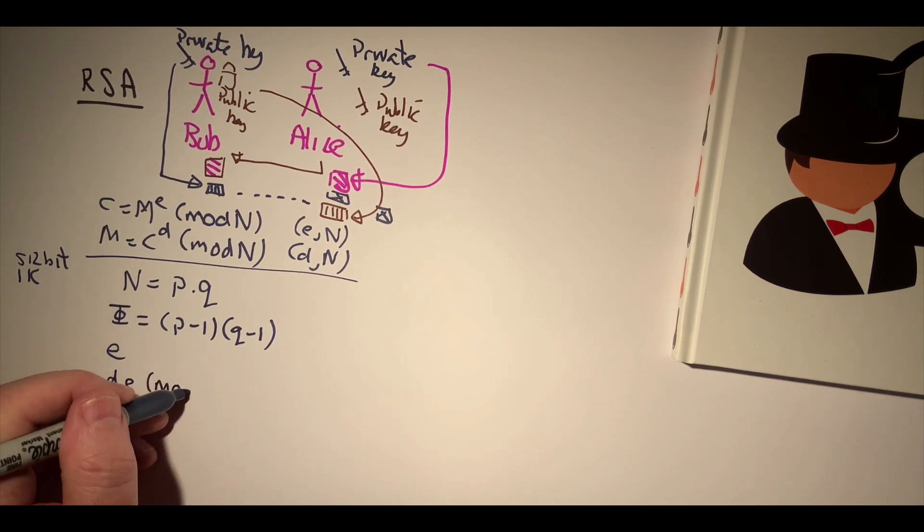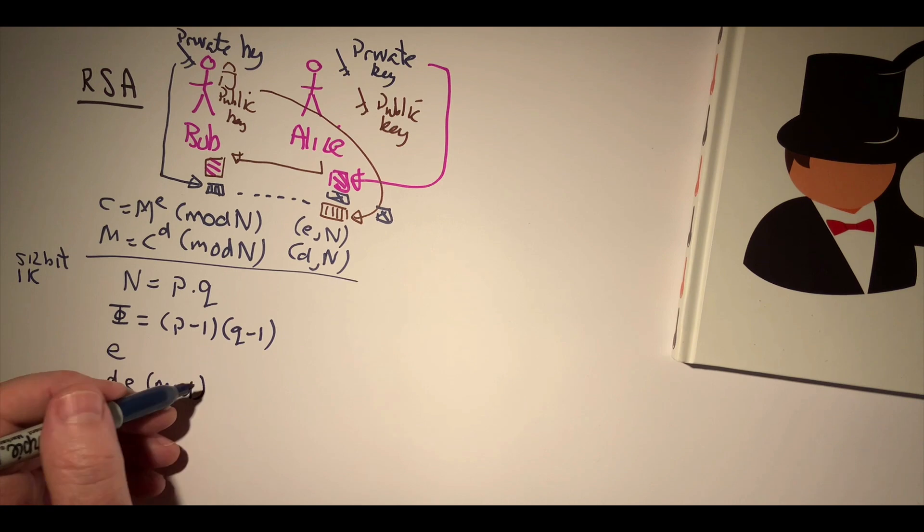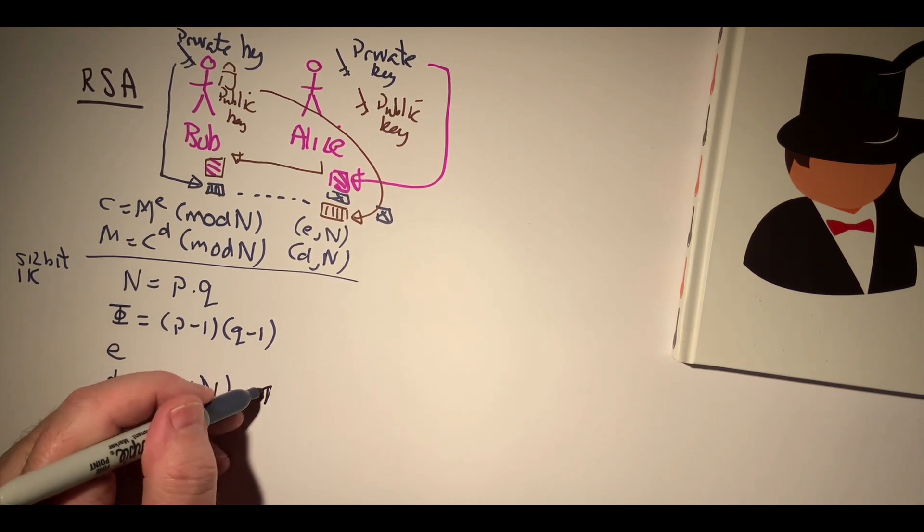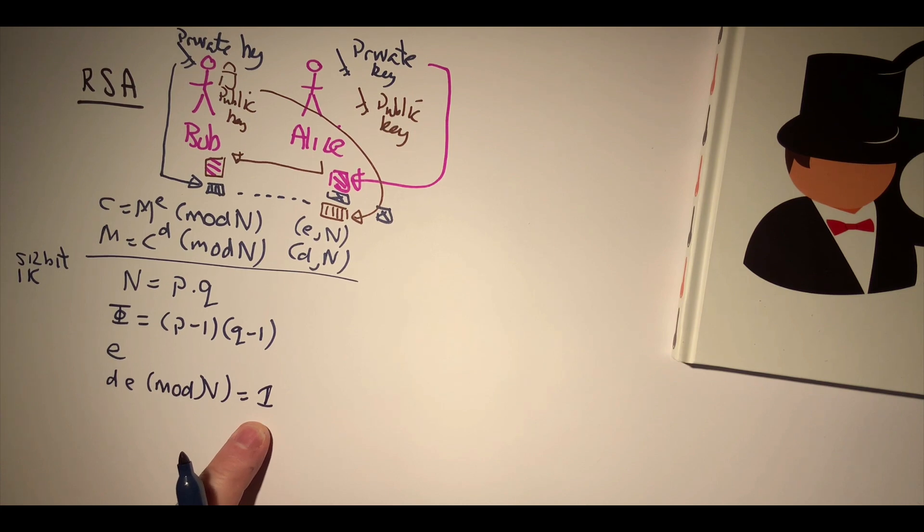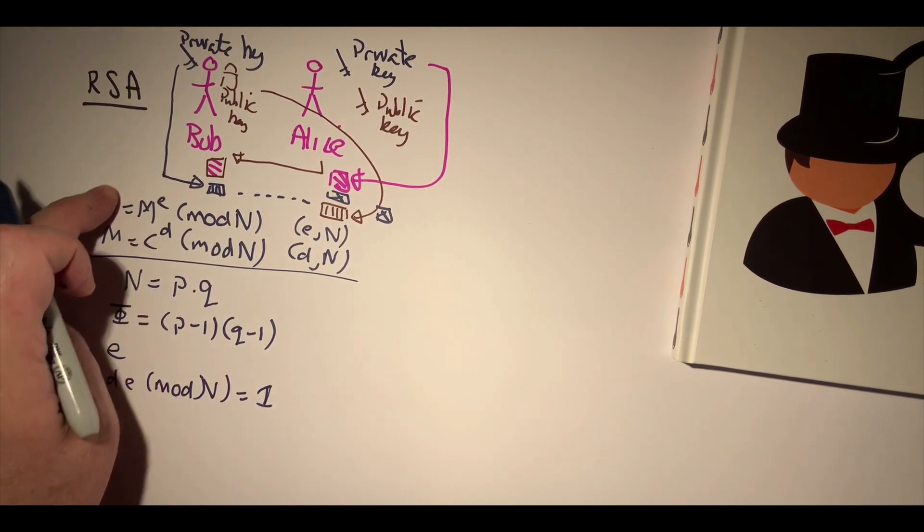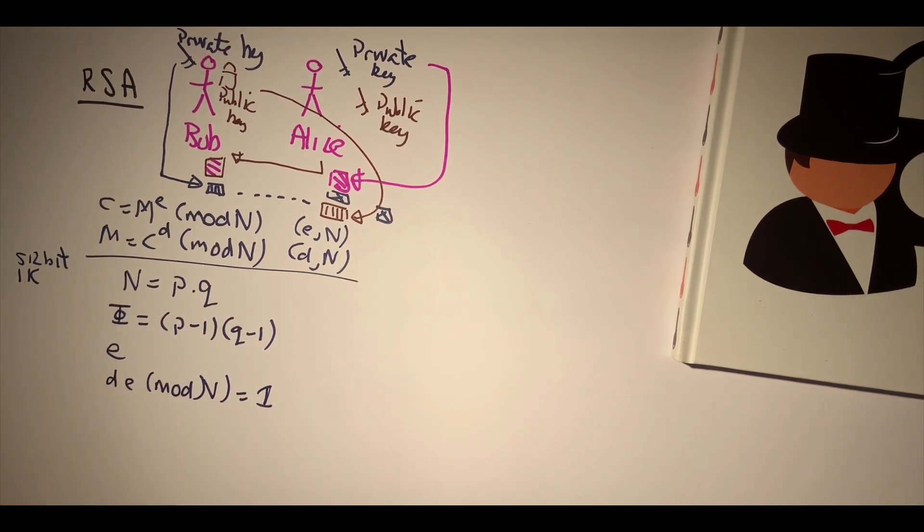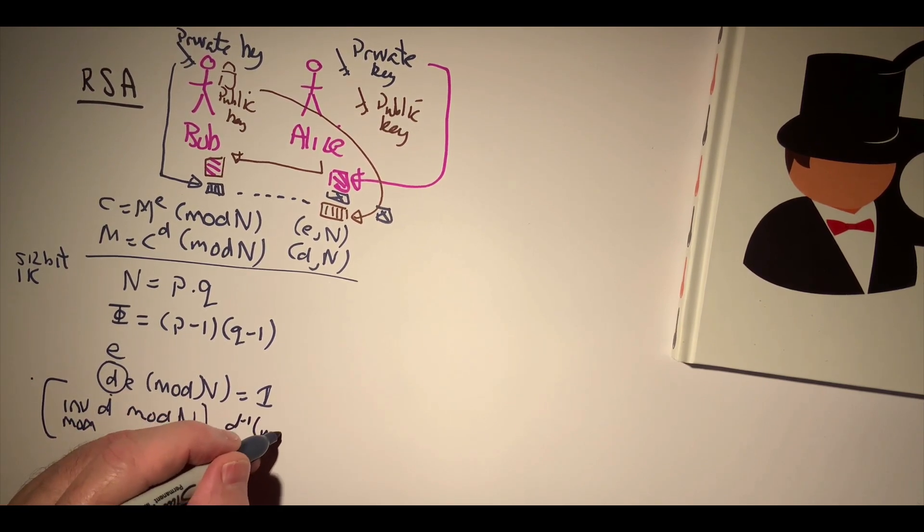To make sure that this will work, if we can make this to work then we have created a trapdoor that allows these two functions to work. This is known as the inverse mod of d, inverse d mod n. We can easily compute that. It's basically d to the minus 1 mod n is the value that we compute.